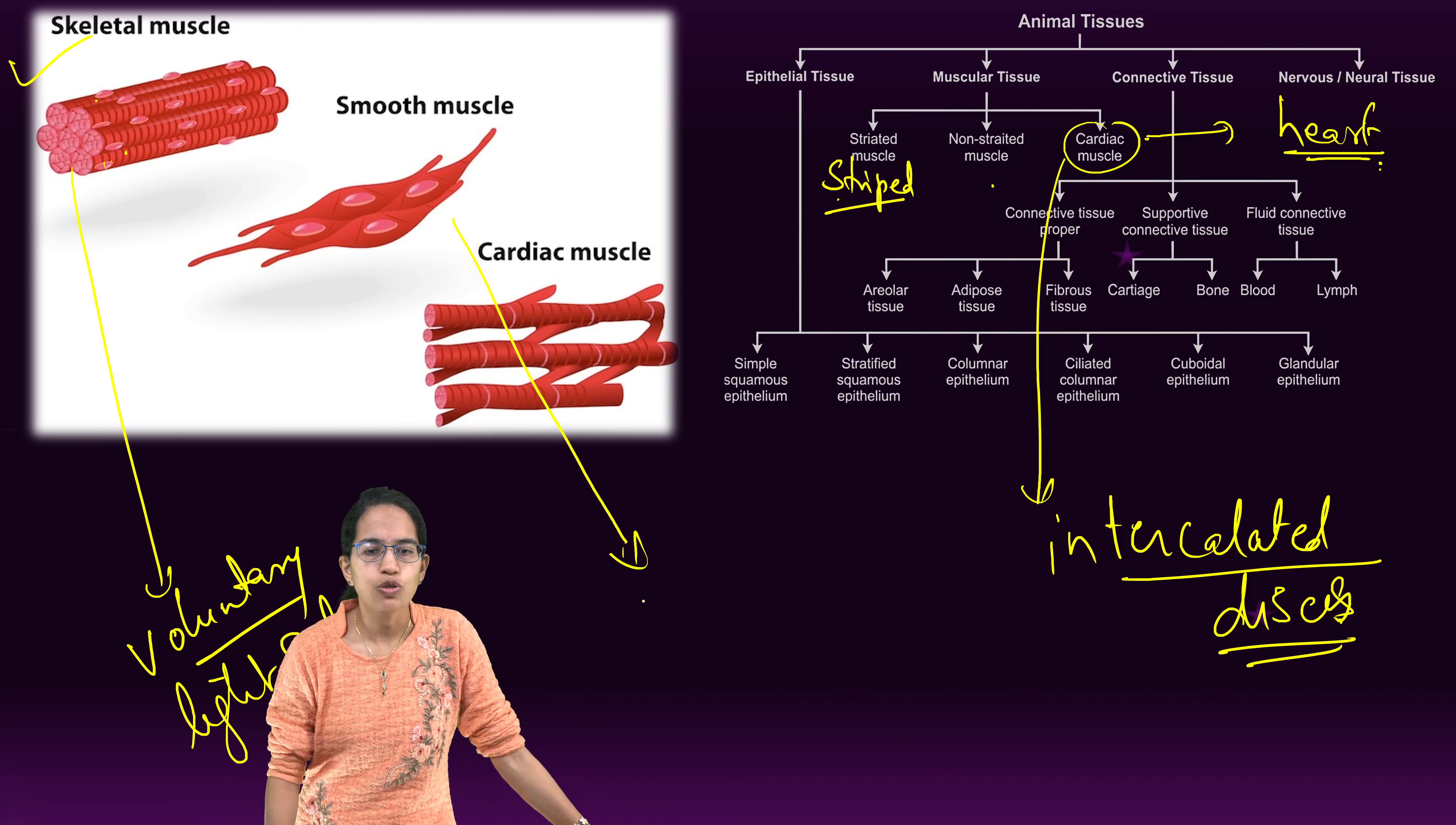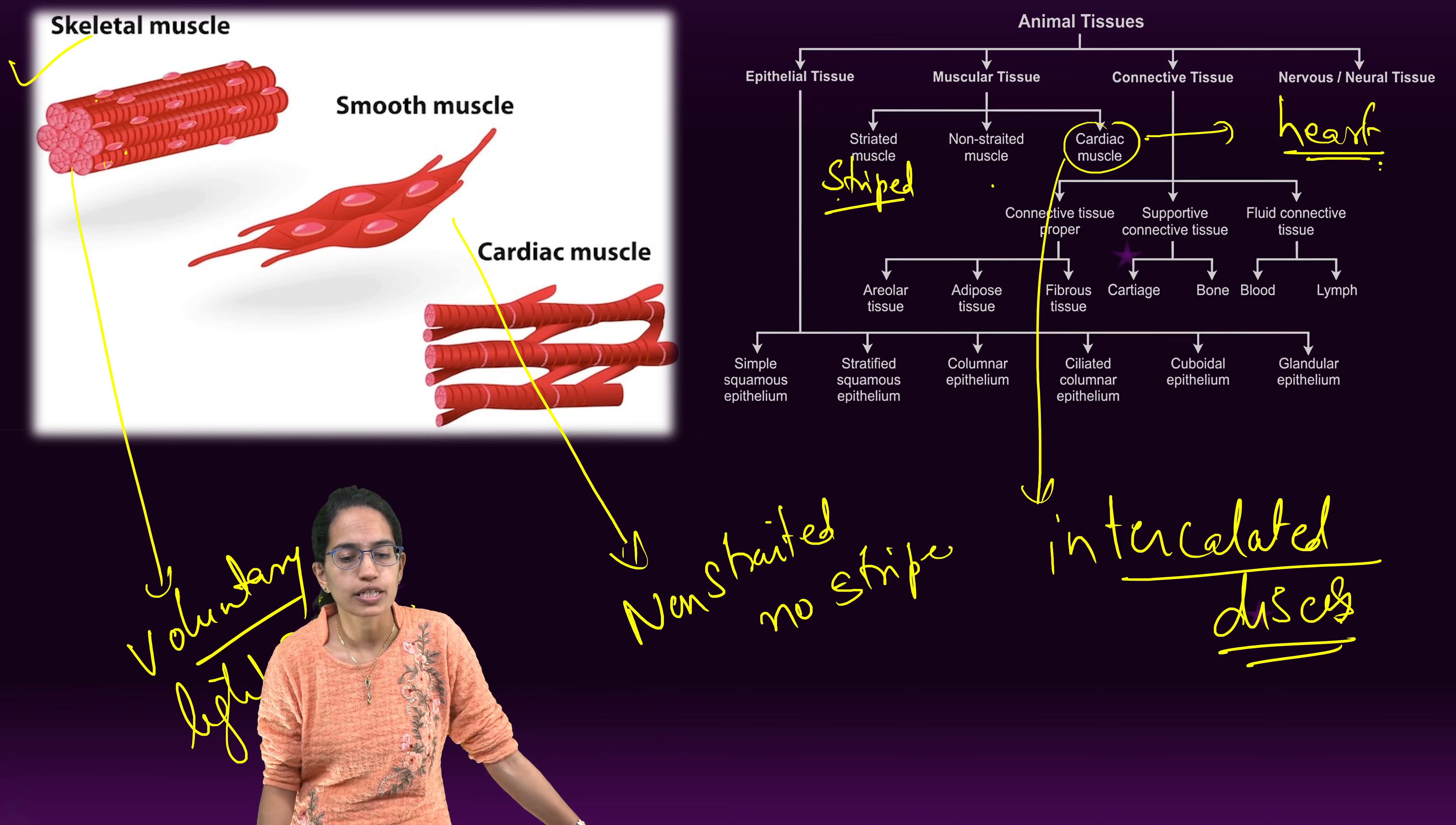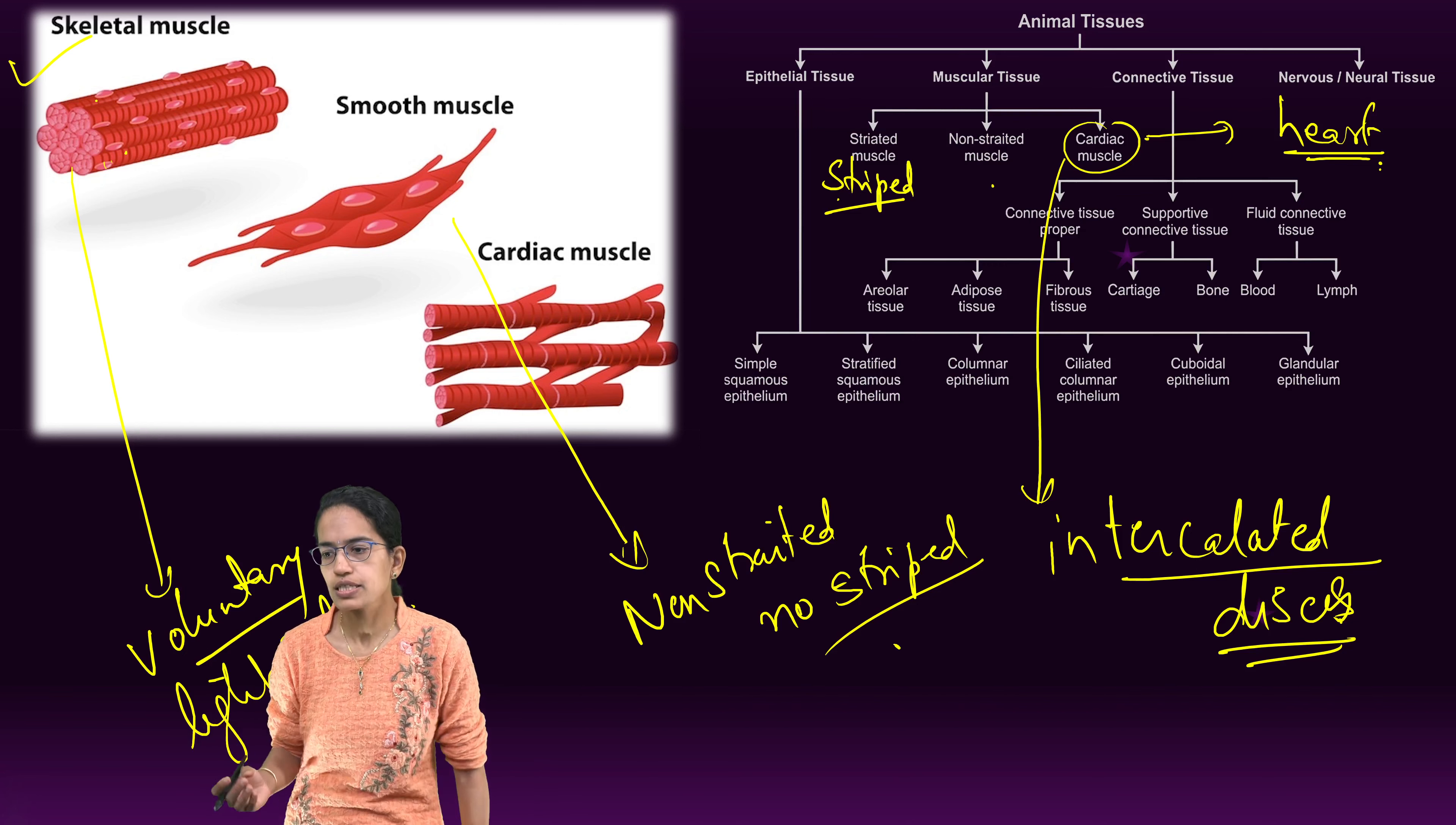Smooth muscle is also called non-striated or non-striped. It is present in involuntary organs. For example, the alimentary canal and urinary bladder are good examples to explain smooth muscles.